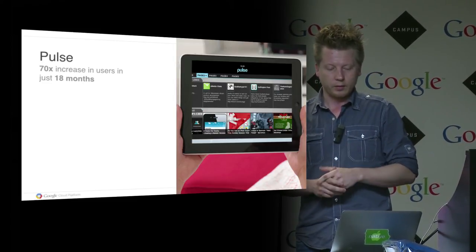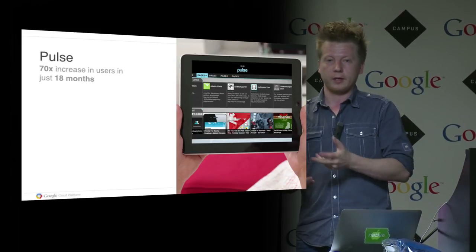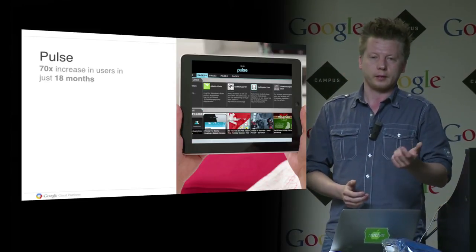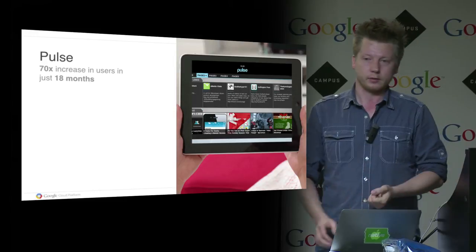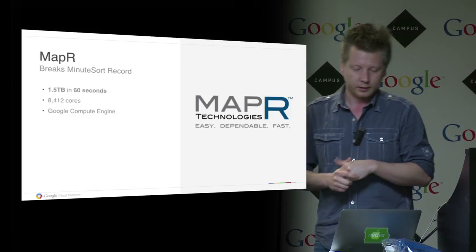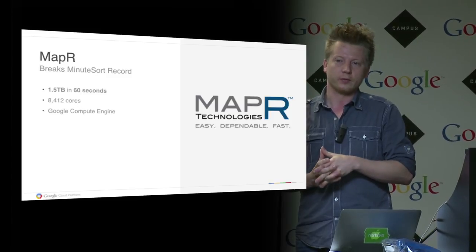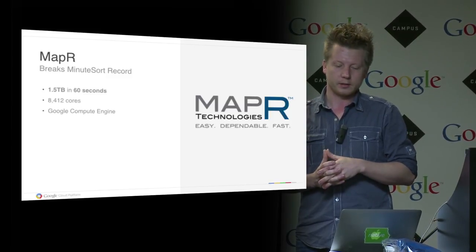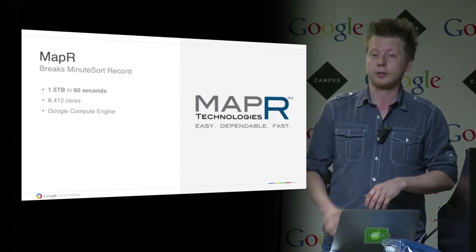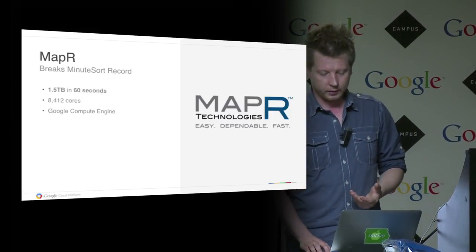Pulse, founded by two Stanford students, was able to focus on building a fantastic app instead of managing infrastructure — and they were later acquired by LinkedIn for $90 million. And finally, Mapper broke the minute sort record: they sorted 1.5 terabytes of data in less than 60 seconds using about 8,400 CPU cores on Compute Engine. That was just to give you an idea of what you can do with Cloud Platform.